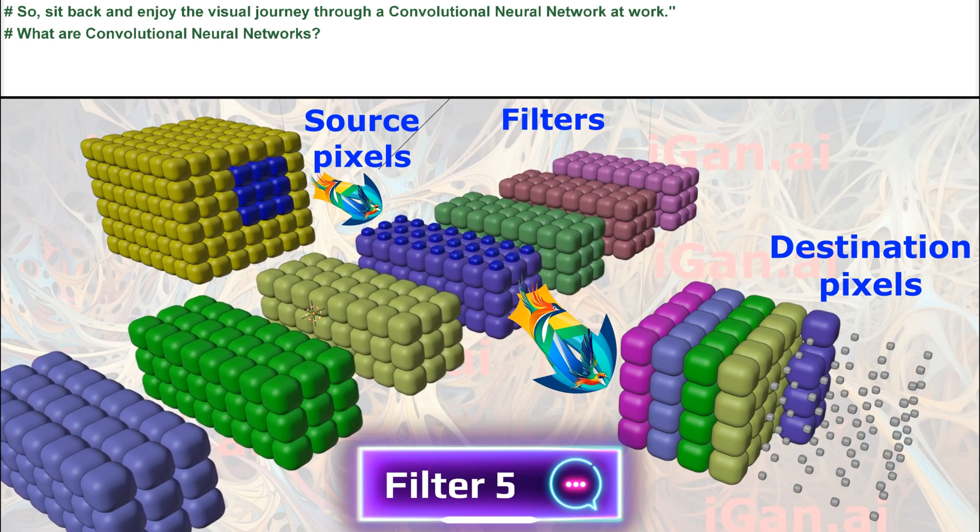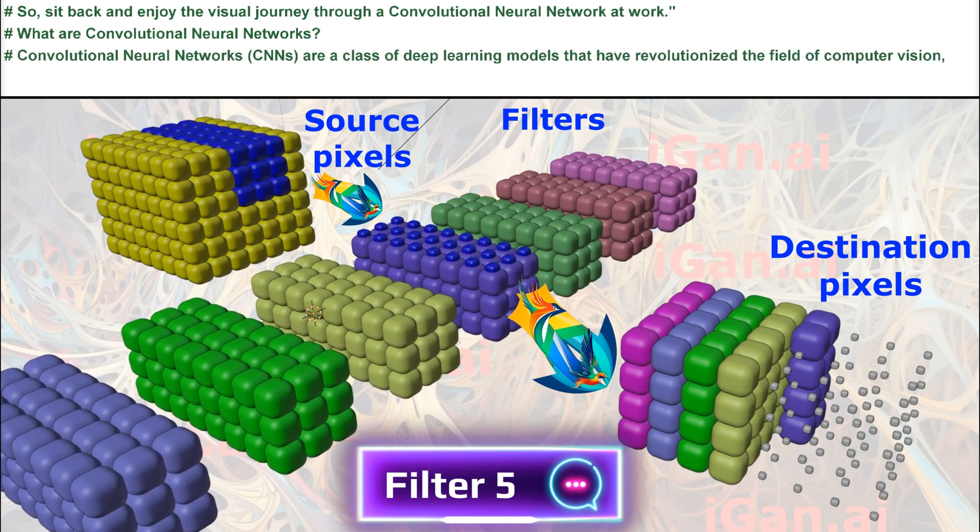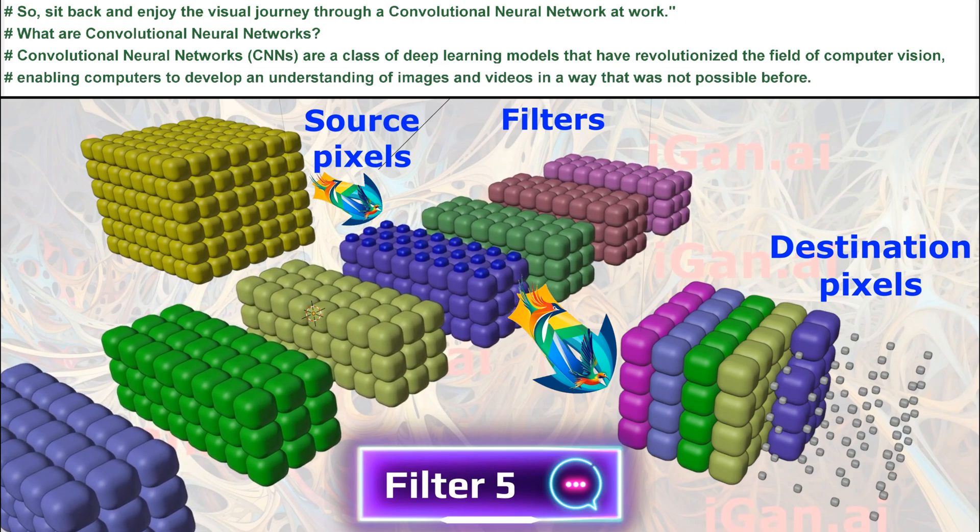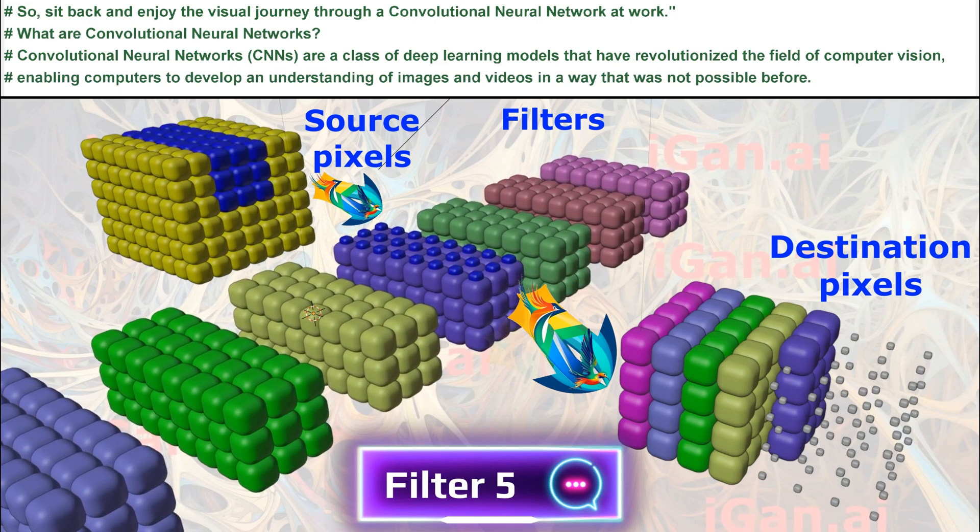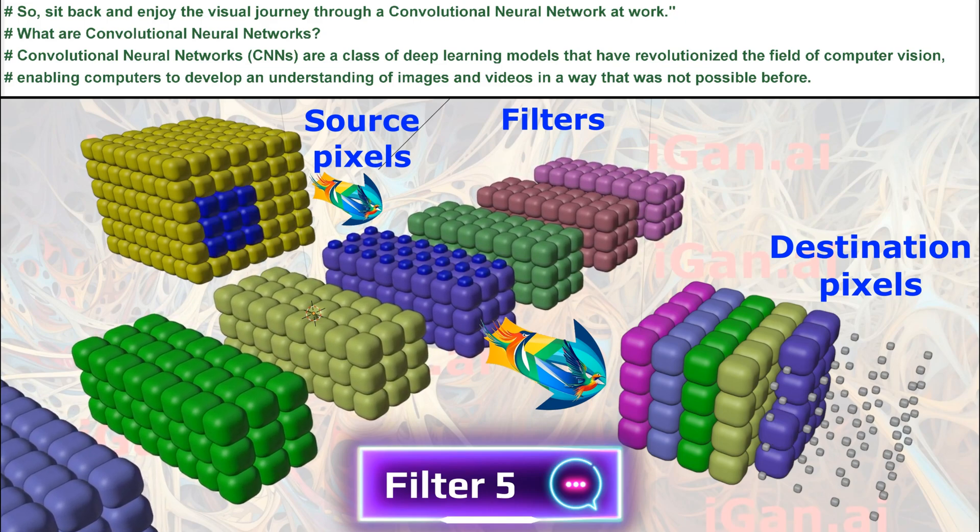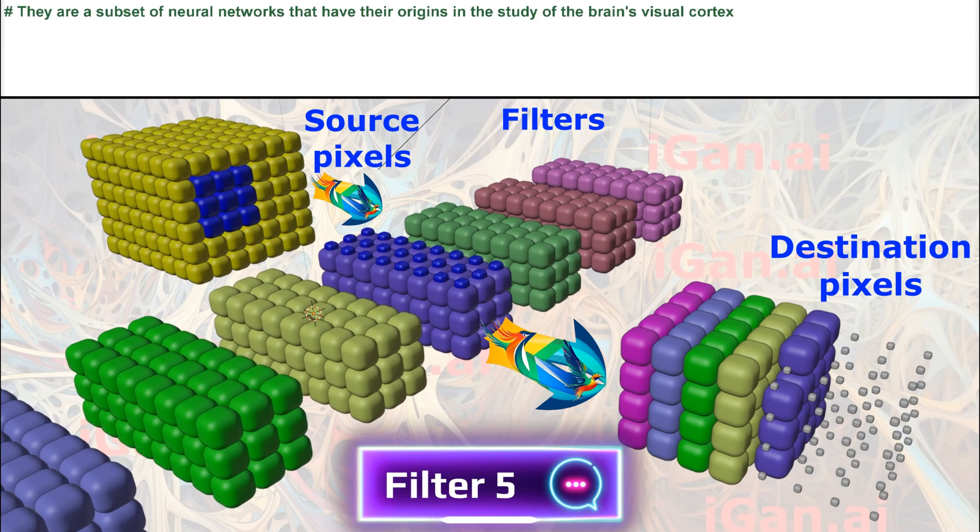What are convolutional neural networks? Convolutional neural networks, or CNNs, are a class of deep learning models that have revolutionized the field of computer vision, enabling computers to develop an understanding of images and videos in a way that was not possible before.